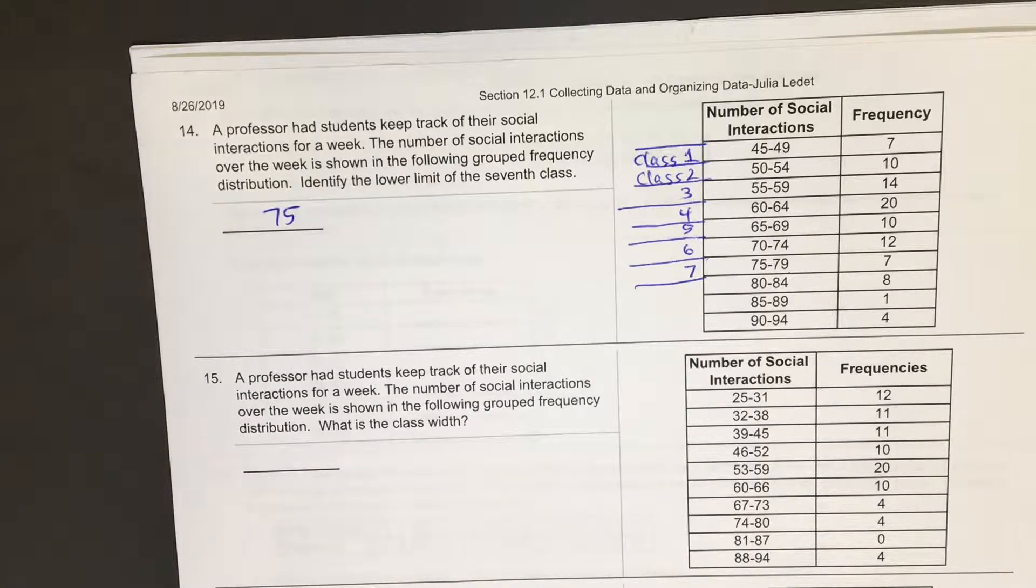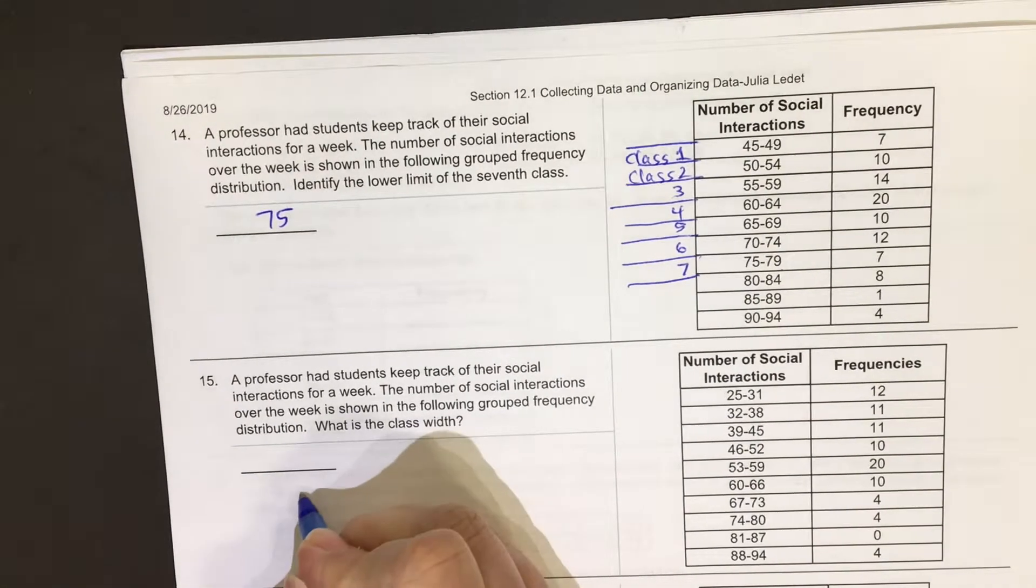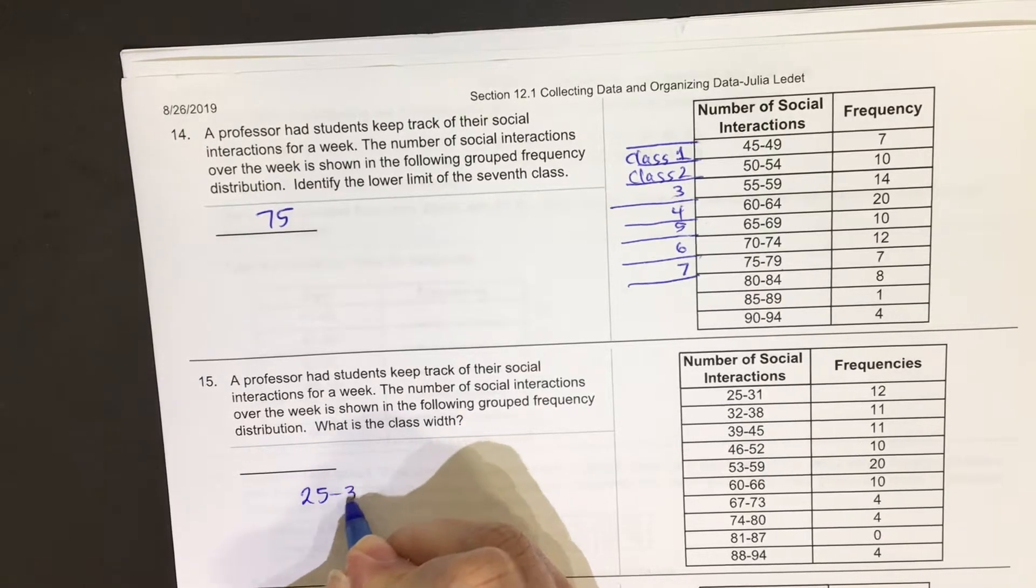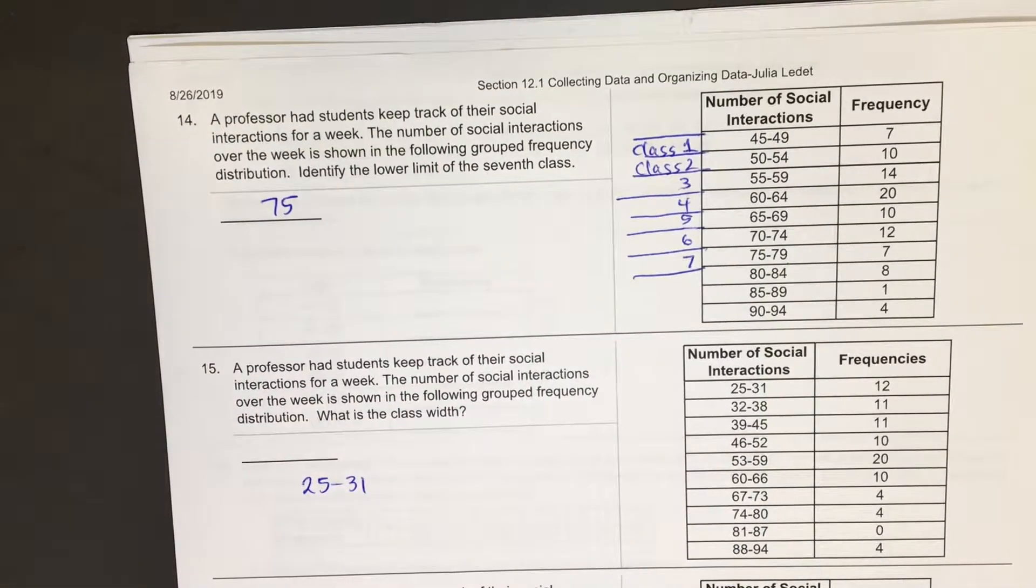This one can be a little bit tricky. I'm going to write out, just pick any of the classes. I'll go ahead and pick the first class. I have 25 to 31. So tricky in the sense of, can I just subtract 31 minus 25? You know what? That's not going to get you the right answer.